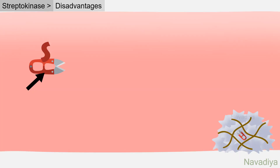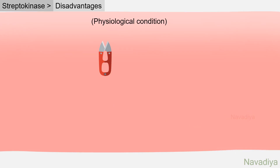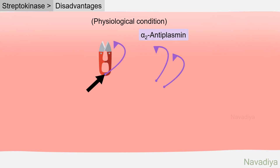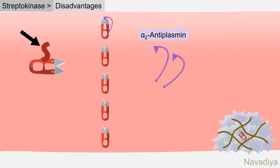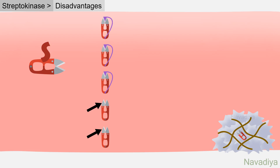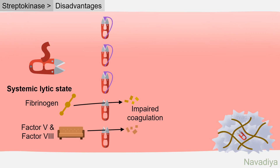Now the disadvantages of streptokinase. It is not fibrin specific. Apart from activating plasminogen in the clot, it also activates plasminogen in circulation. Under physiological conditions, alpha-2-antiplasmin keeps circulating plasmin under control by binding its lysine binding site and then blocking the catalytic site. However, when we give streptokinase on top of the body's own plasminogen activators, there is massive production of plasmin. Even after consumption of the entire pool of alpha-2-antiplasmin, active plasmin remains, degrading clotting factors like fibrinogen, factor 5, and factor 8, which impairs coagulation.